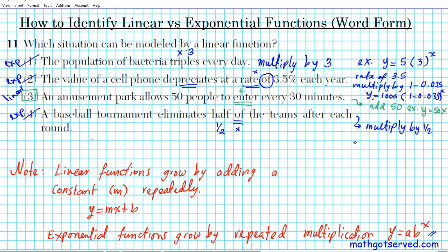So let's say there were 100 team members to start. It's going to be y equals the initial amount 100 times the decay factor, which is one half raised to the x power. And as you can see, this is a representation of an exponential function. That's why it doesn't fit the description. So the answer to number 11 is option number 3.